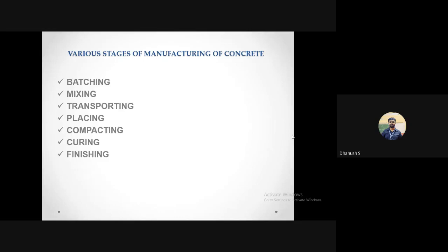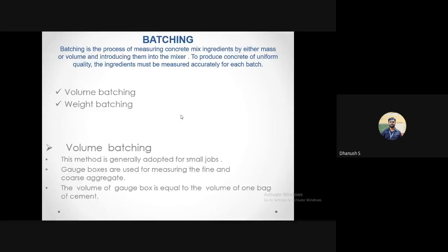Starting with batching: recall the phenomenon of bulking of sand, where there is an apparent increase in the volume of sand due to the presence of moisture. This bulking has a lot of detrimental effect if batching is not done properly. Based on how we measure things, we can classify batching into two types: volume batching and weight batching.